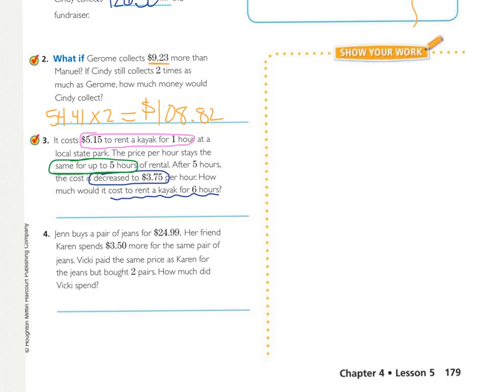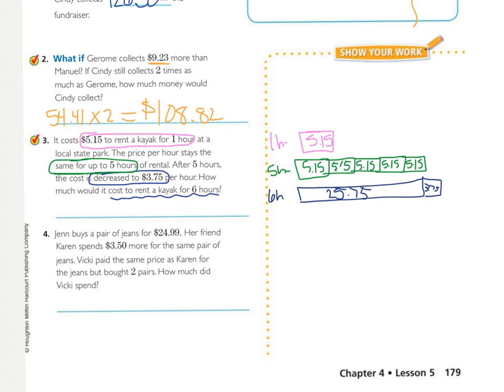For number three, you have $5.15 for one hour. The same price, $5.15 for each hour up to five hour. And then, then every hour after that is $3.75. Draw your diagram. For six hours, it should be equal in length, up to the five hour point, which is $25.75. And then, the sixth hour changes to $3.75. So, I add those together to get my final answer of $29.50.